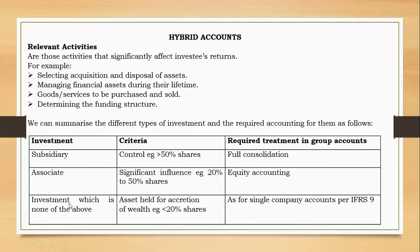When owning less than 20% of an entity, it is treated as a normal trading investment. You receive your dividends and proceed. This is dealt with under financial instruments — specifically IFRS 9, which covers financial instruments measurement and recognition. This completes the summary of group accounts.